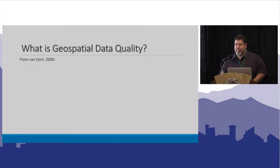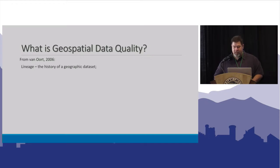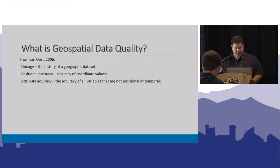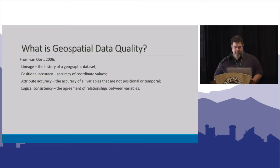From an academic point of view, we sort of lump geospatial data quality into six characteristics: the lineage of the data, the history of the geographic data set; the accuracy, particularly the positional accuracy — how closely does the data represent its true position on the ground; and then attribute accuracy — is it the thing that we say it is, does it have the right characteristics; and logical consistency, which is whether or not we are consistent in how we represent the data.